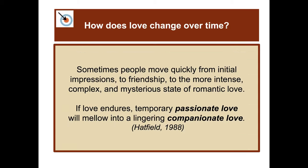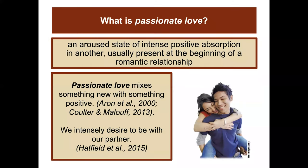How does love change over time? Sometimes people move quickly from initial impressions to friendship to the more intense, complex, and mysterious state of romantic love. If love endures, temporary passionate love mellows into a lingering companionate love. Passionate love is an aroused state of intense positive absorption in another, usually present at the beginning of a romantic relationship.